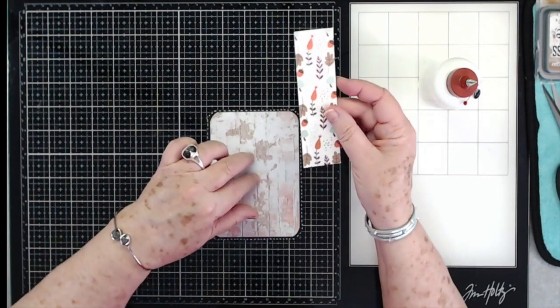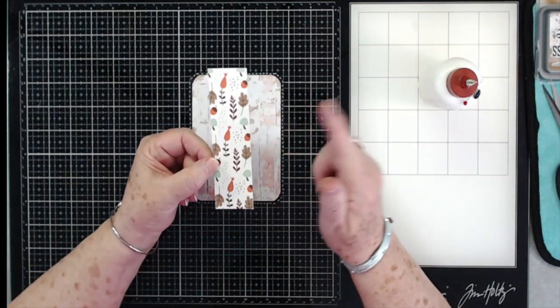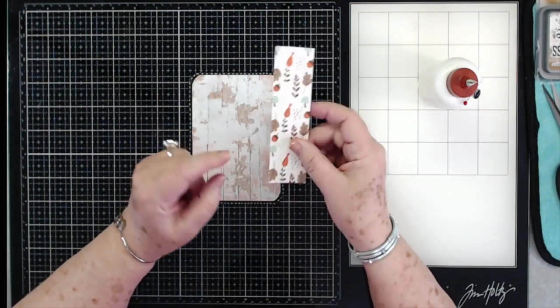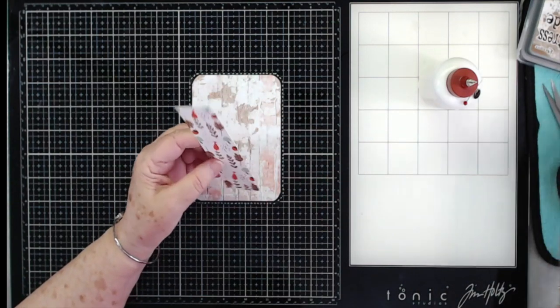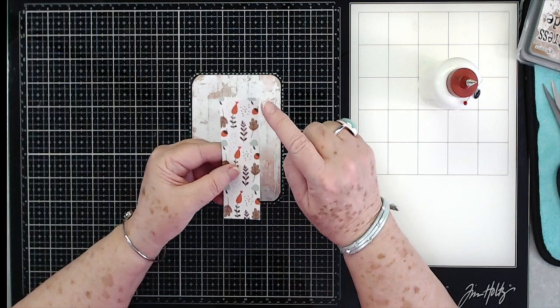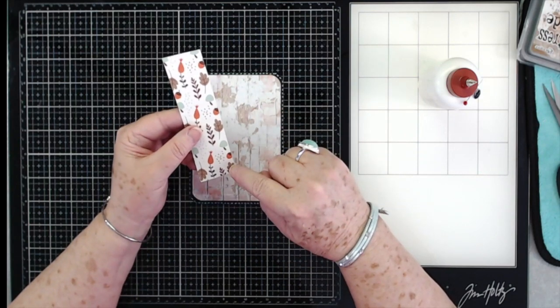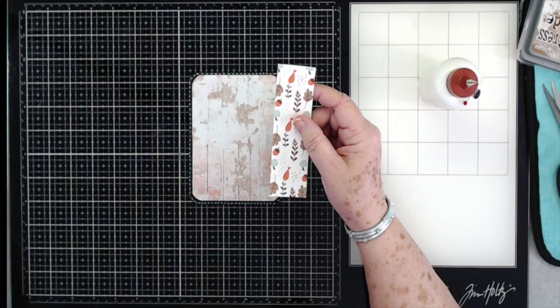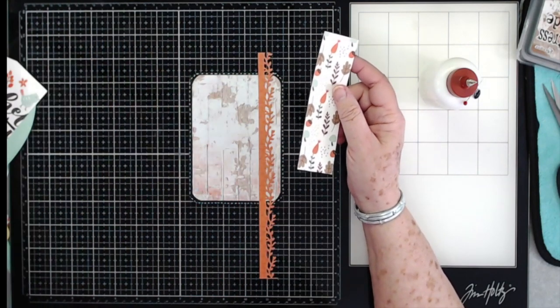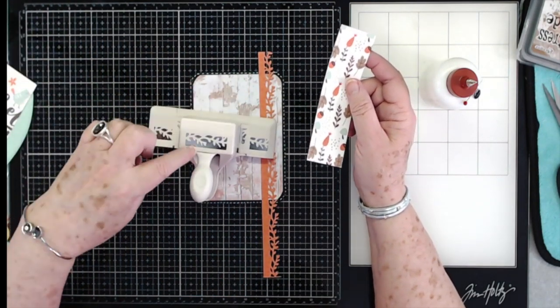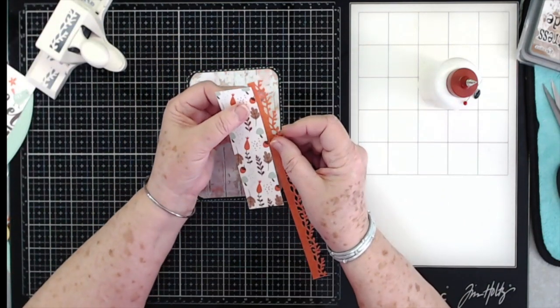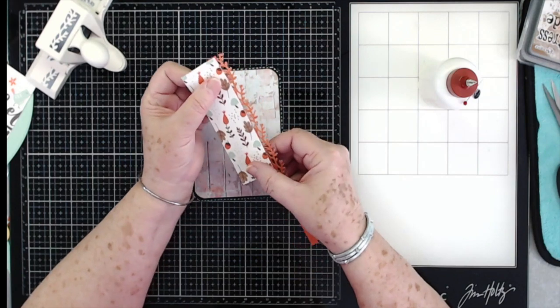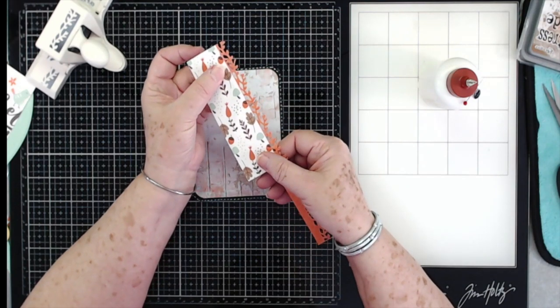So there we go, we've got that down. Now I have cut just a piece of scrap from another paper collection that is fall. This is from the My Favorite Fall, this was the add-on kit. I've got it cut at one and a half inches by five and a quarter. Then I have taken my punch, just this punch right here, it's like a branch punch, and I have punched out some of those branches. I'm going to run those right down the edge.